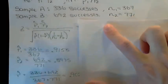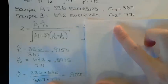The pooled sample proportion is the total number of successes from both samples divided by the total sample size.